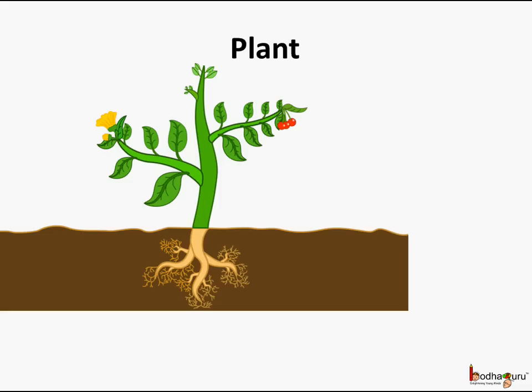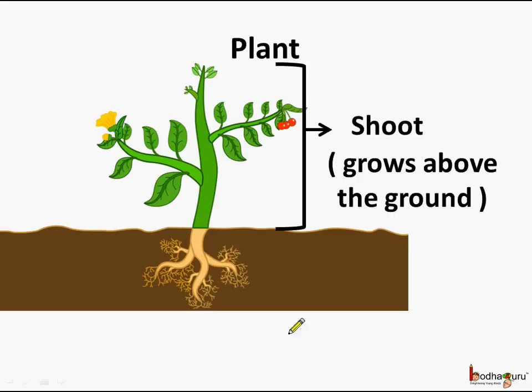The part of the plant which grows above the soil is called the shoot. Here is the shoot which grows above the ground.